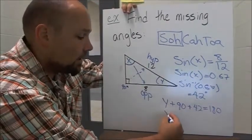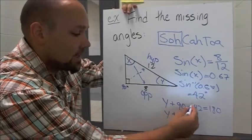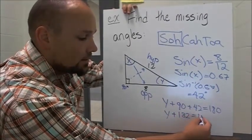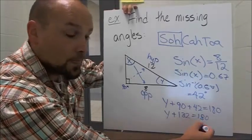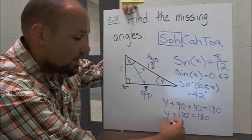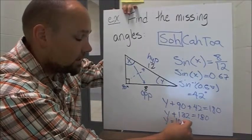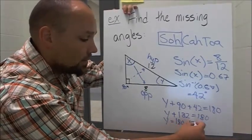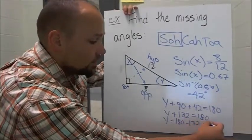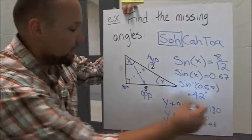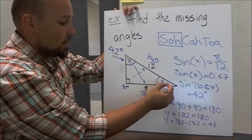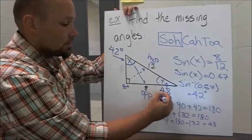So that means that y plus 90 plus 42 is 180, and then all we have to do is figure out y by taking that over to the other side, so that means y is 180 minus 132, so that's equal to 48. So that means that x was 42 degrees and y was 48 degrees.